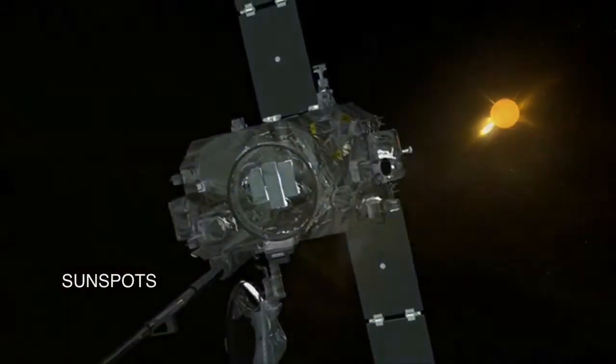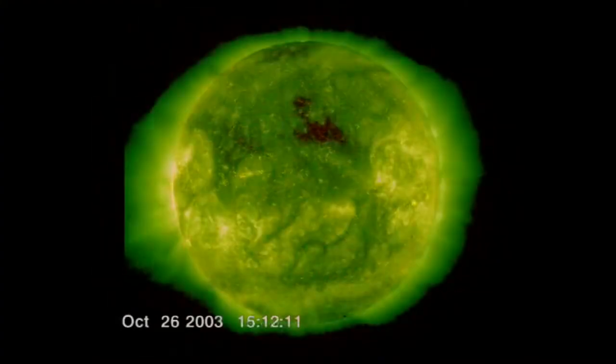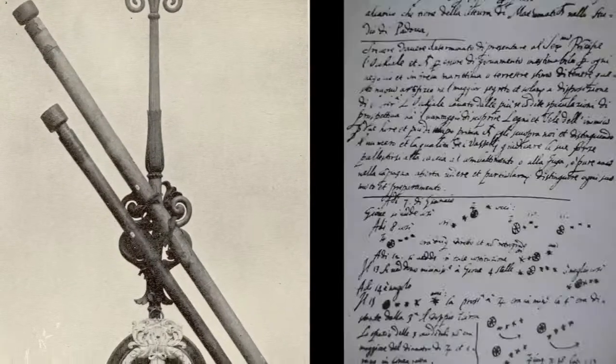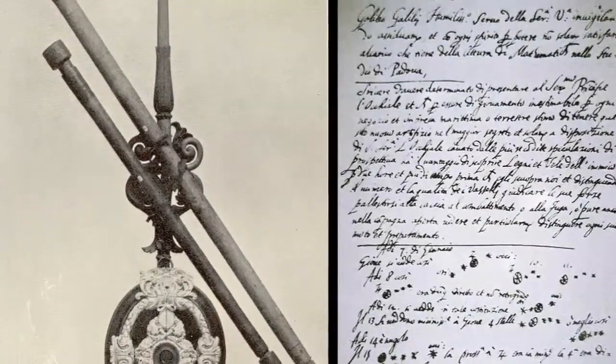Before sophisticated satellites brought us vibrant images in wavelengths beyond our senses, people simply looked at the sun. Although he was not alone in his pursuit, in 1609, Galileo Galilei pioneered the use of the telescope in order to observe and record sunspots.